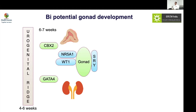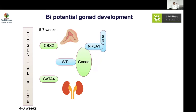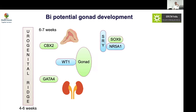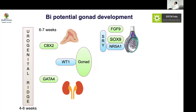The SRY gene on the Y chromosome determines testicular development. SRY, along with NR5A1, activates the major pro-testis gene SOX9. The interaction of SRY and NR5A1 is essential for SOX9, which controls the entire testicular development — from Sertoli cells to Leydig cells to myoid cells — along with the role of FGF9.